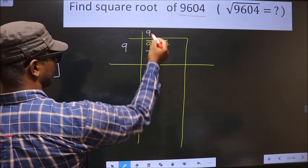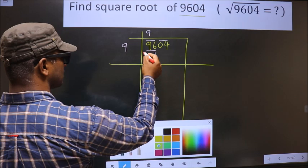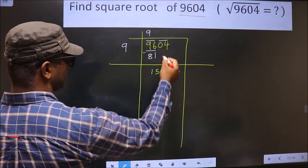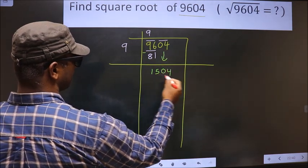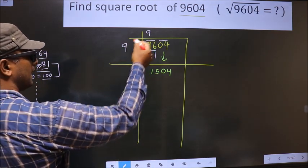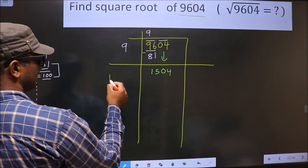9 times 9 = 81. Now you subtract: 6 minus 1 is 5, 9 minus 8 is 1. Now you take this pair down, making it 1504. Here we should add these two numbers, that is 9 plus 9 = 18.